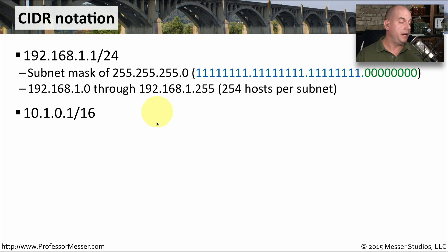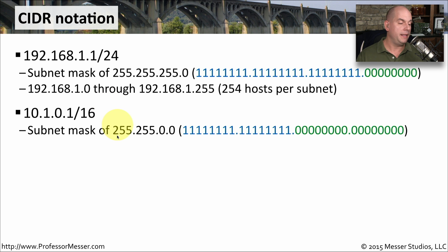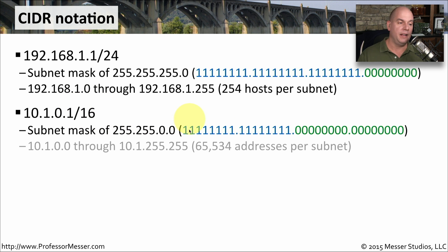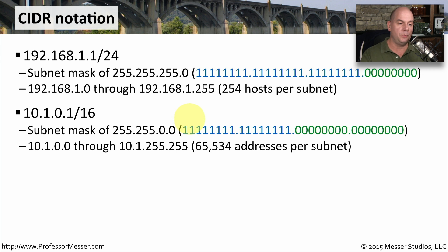Here's another CIDR block notation example: 10.1.0.1/16. It's a similar scenario. We take that old subnet mask of 255.255.0.0, which is 16 ones, thus the slash 16. And if we do the math, this is the range of IP addresses we would get for this particular subnet. Of course, we don't have to end a subnet mask at the end of an octet.